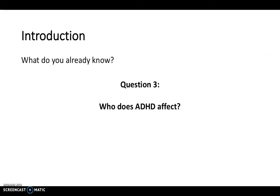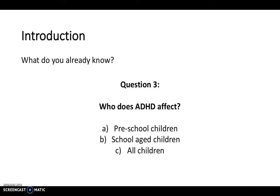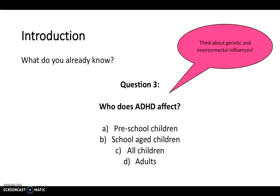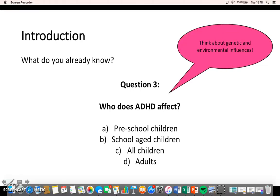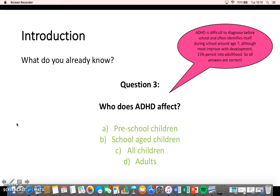Question three: who does ADHD affect — is it A) preschool children, B) school-aged children, C) all children, or D) adults? Think about how long genetic and environmental influences act. ADHD tends to be diagnosed around the time a child starts school, at around age seven, because before this there is such great variation in preschool behaviour that it is difficult to distinguish normal from abnormal.